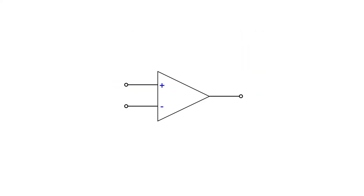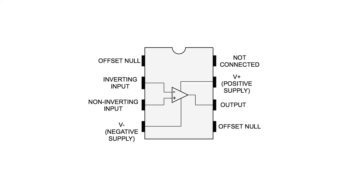Other connections on the op-amp must not be forgotten. Power rails are needed, typically positive and negative. As these are assumed to be present, they are not normally shown on circuit diagrams, keeping them from becoming too cluttered with unnecessary wires. Other connections that may be present are the offset null ones. These are used to reduce any small DC offsets that may be present at the output, and may be used for certain DC amplification circuits. If they are not to be used, they can just be left unconnected.